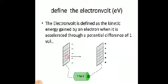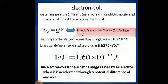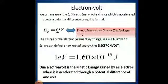Electron volt is notated as small e into capital V. The kinetic energy of a charge accelerated through a potential difference of 1 volt is given by kinetic energy Ek is equivalent to charge q into potential V. We have already discussed work done as charge into potential, and here the work done will be equivalent to the kinetic energy gained by the electron.